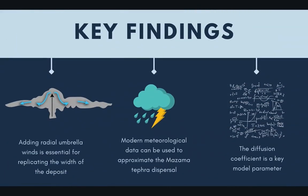To sum up the key results from this study: we found that adding radial umbrella spreading is really key in order to replicate the width of a magnitude 7 eruption ash deposit such as the Mazama eruption. It was also really useful that we were able to use modern meteorology data for these simulations — and this might not always be the case, as for much older eruptions the wind fields during the eruption may differ from present day. So that was a real benefit of using the Mazama deposit.